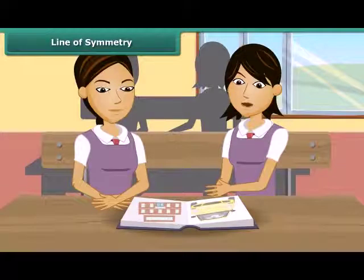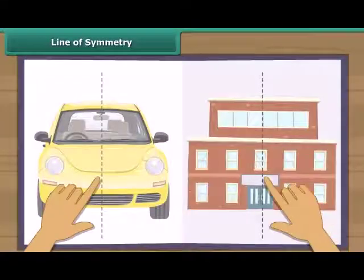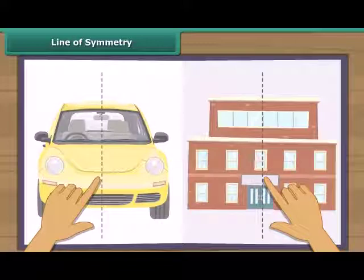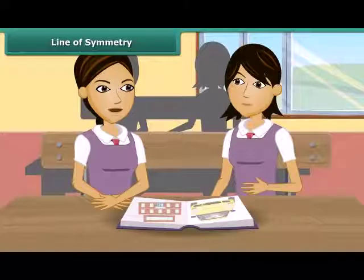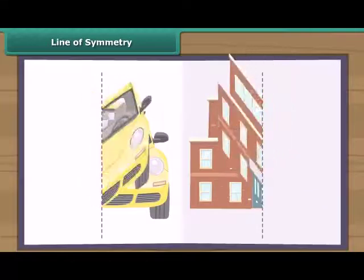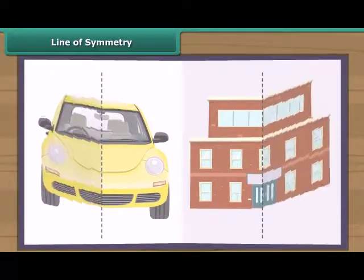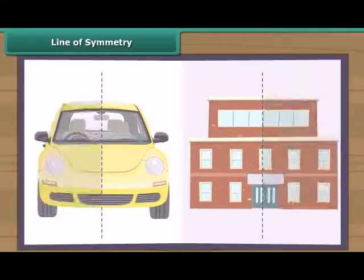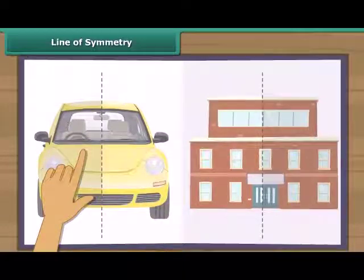Look at these figures. The line you can see is the line of symmetry of these figures. Line of symmetry — what is that? When we fold the figure about this line of symmetry, we will see that the two parts of the figure are coinciding.